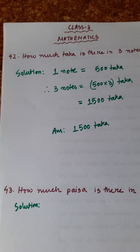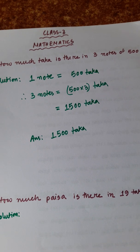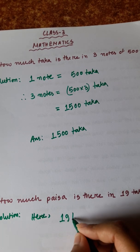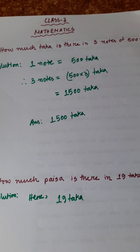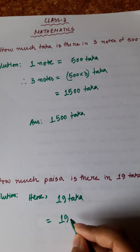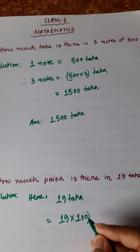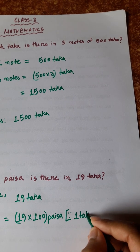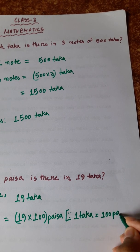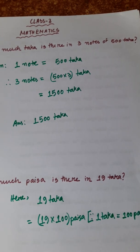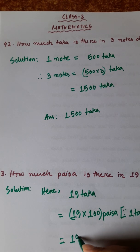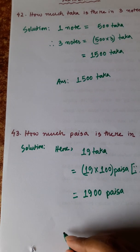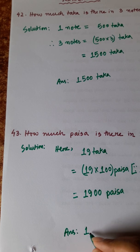Number 43: How much paisa is there in 19 taka? To find this, we convert taka to paisa, so it requires a multiplication: 19 into 100 paisa, since 1 taka is equal to 100 paisa. The multiplicand is 19 and we add two zeros, giving 1900 paisa. Answer: 1900 paisa.